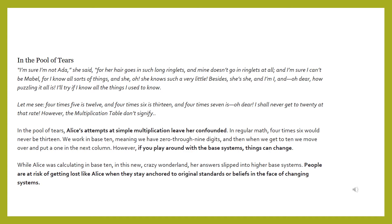In the Pool of Tears, Alice says: 'I'm sure I'm not Ada, for her hair goes in such long ringlets and mine doesn't go in ringlets at all. And I'm sure I can't be Mabel, for I know all sorts of things, and she knows such a very little. And I'm I — oh dear, how puzzling it all is. I'll try if I know all the things I used to know. Let me see: 4 times 5 is 12, and 4 times 6 is 13, and 4 times 7 is — oh dear, I shall never get to 20 at that rate. However, the multiplication table doesn't signify.'